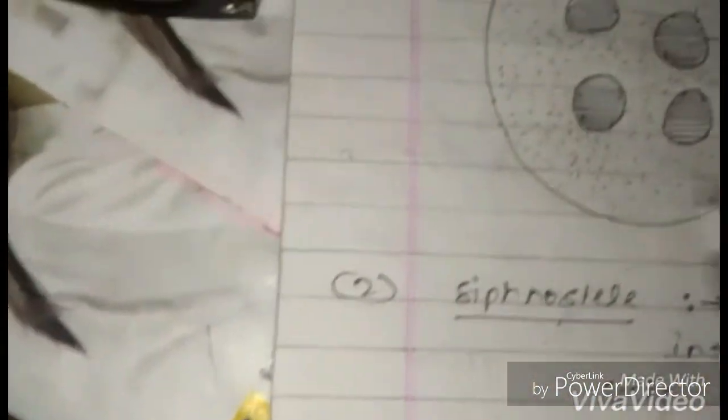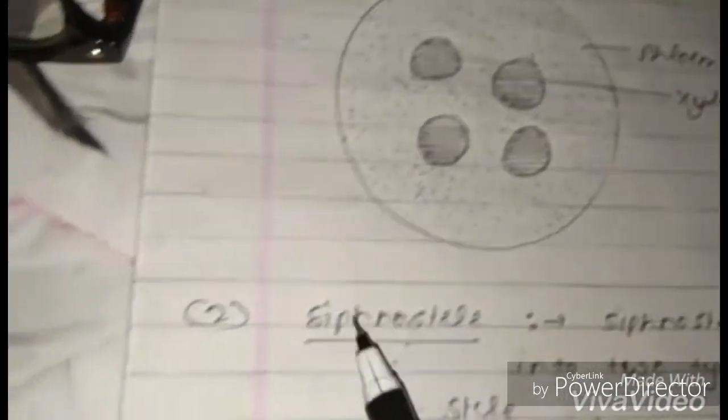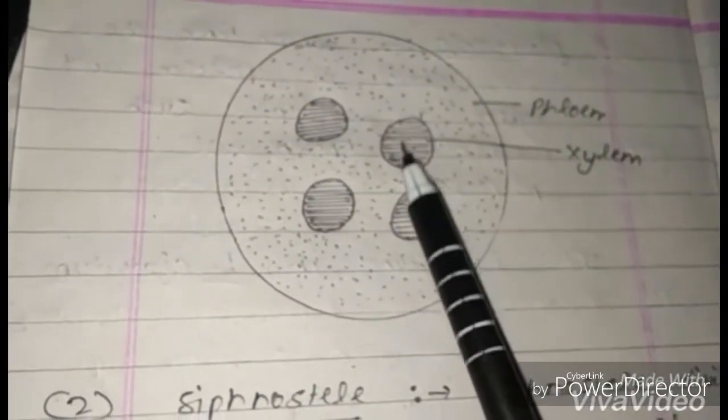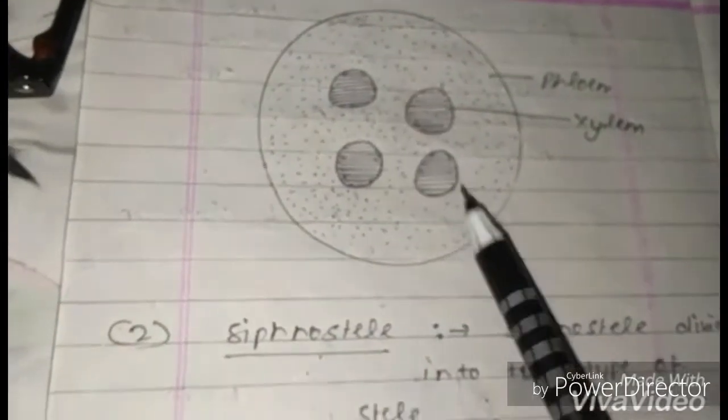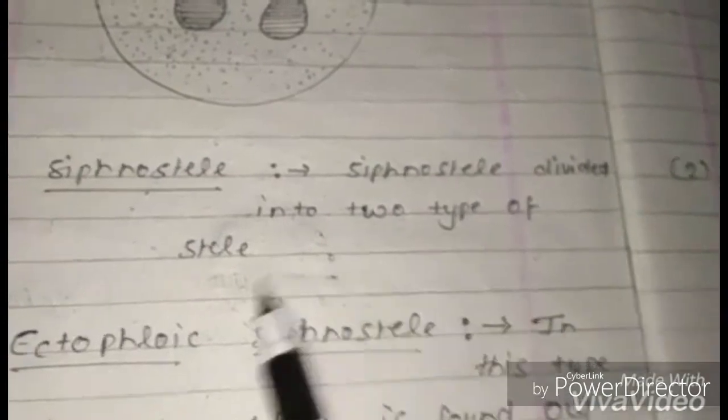Mixed protostele: in this type of stele, xylem is mixed in phloem — in other words, xylem is embedded in phloem. It is found in Lycopodium gnanum. Here is the figure of mixed protostele showing xylem embedded in phloem.